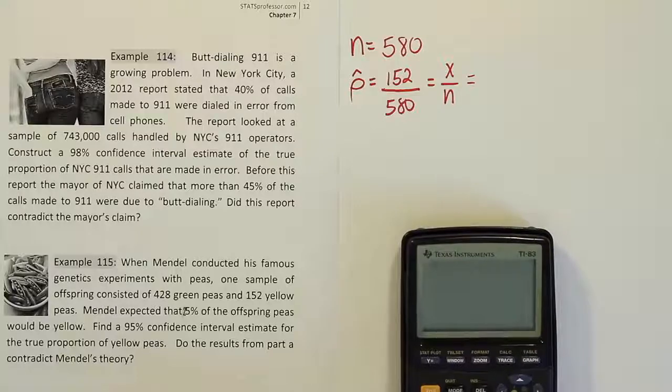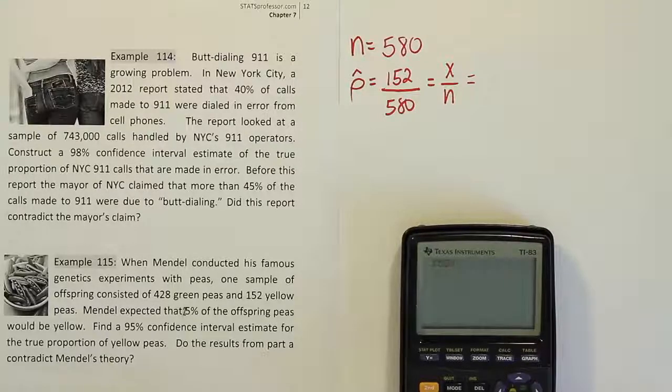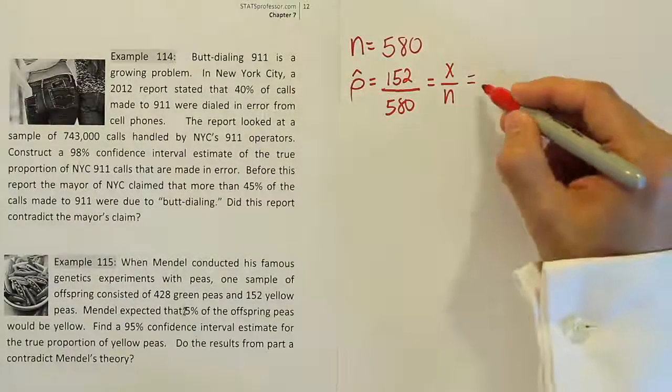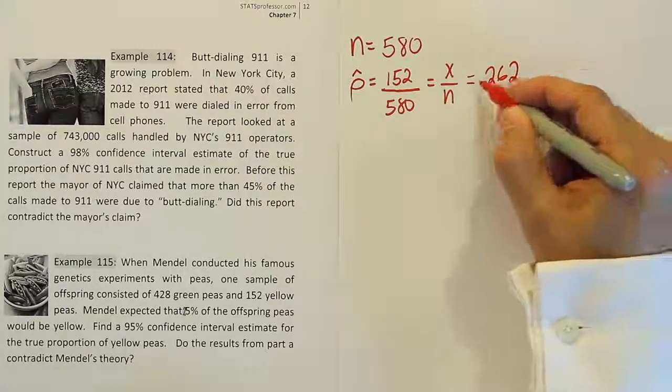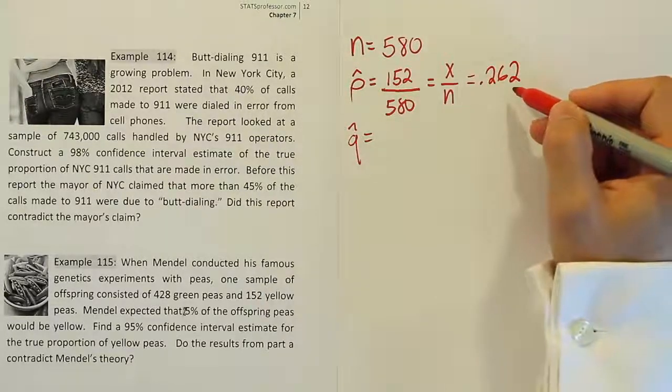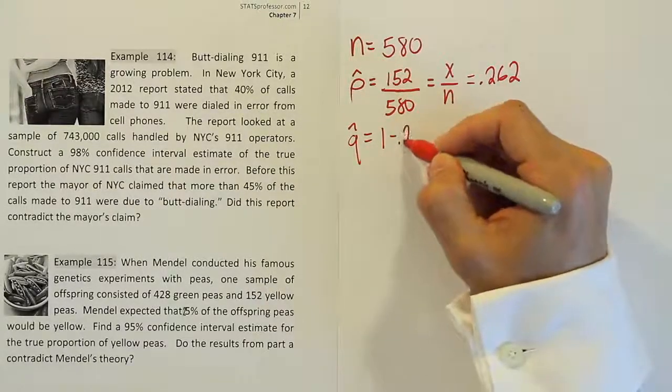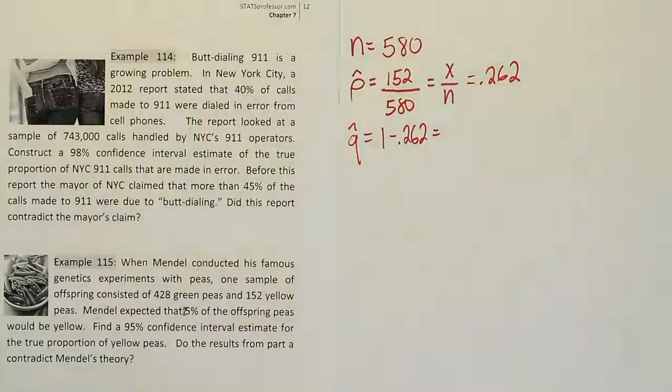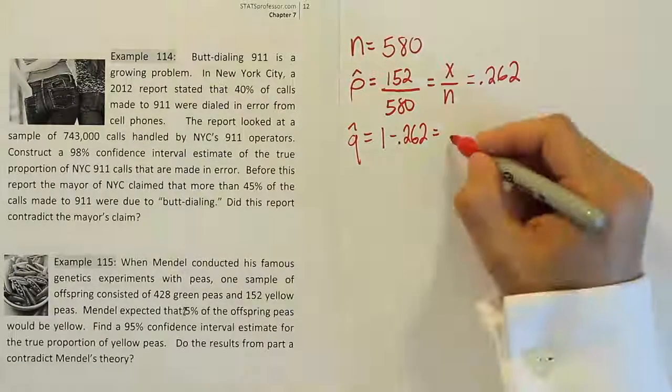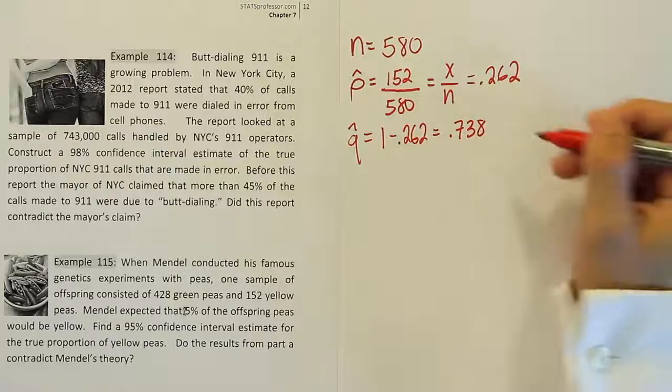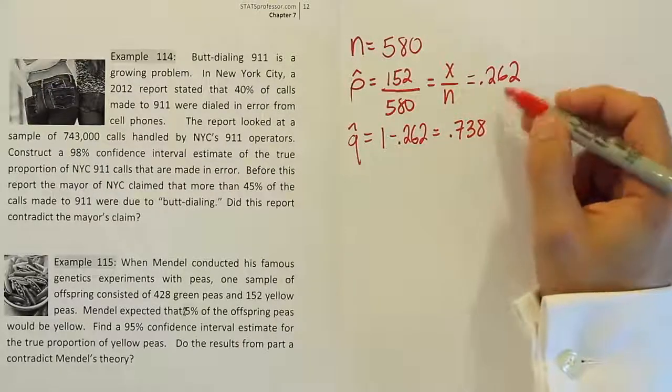So, looking at our thing, we have 152 divided by 580. And when we're done, we get 0.262, roughly 0.262. I'm going to round it off to three places here, just for your convenience, 0.262. Now, your q-hat is the complement of that. So, what's the leftover from 1? So, 1 minus 0.262, and we're going to have 0.738 as the leftovers if you do 1 minus 0.262. So almost 74%, almost 26%.